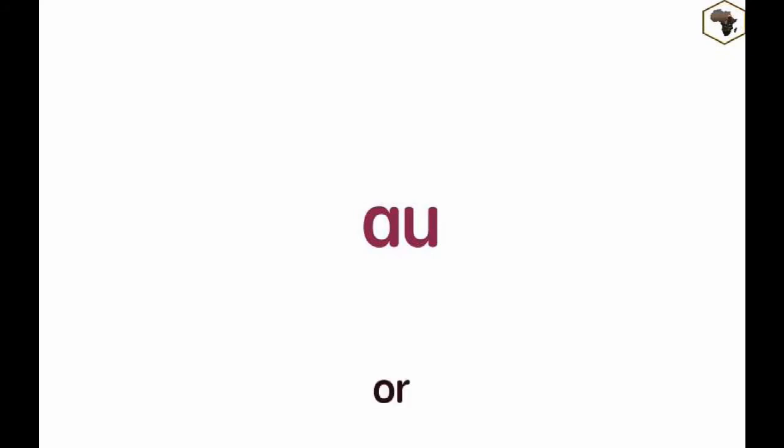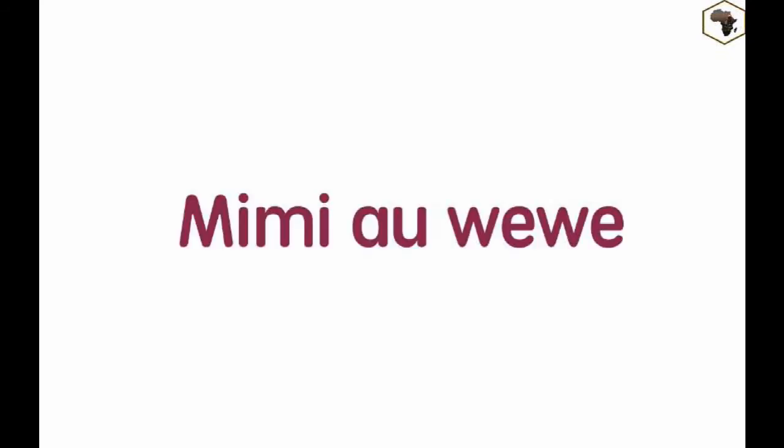Next we have 'ao.' Ao means 'or' in English. For example: Mimi ao wewe, which means 'me or you.'